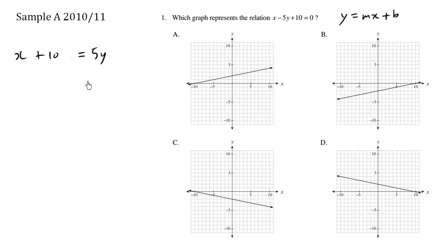This is where we can divide both sides by 5. So we have y equals, we have x over 5, and we also have 10 over 5, which is the same thing as 2.